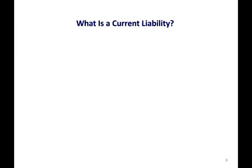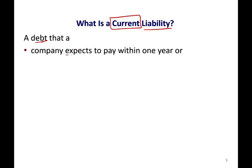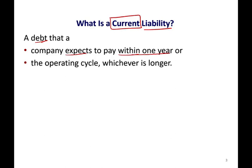So what is a current liability? A current liability is simply a debt. Liability is a debt, but we need to define the word current. If it's a current liability, it means the company expects to pay it within one year or the operating cycle, whichever is longer. Simply put, it's a liability that the company has to pay within one year or the operating cycle.